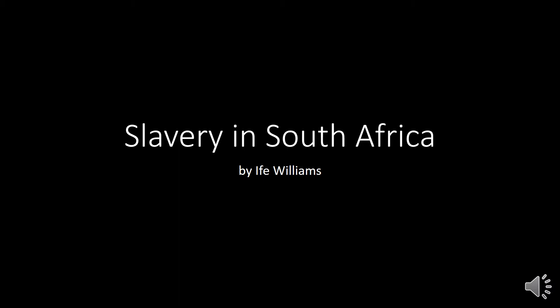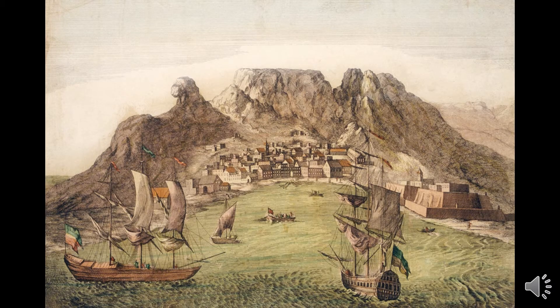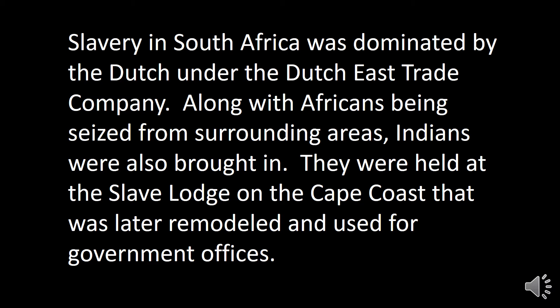Slavery in South Africa was dominated by the Dutch under the Dutch East India Company. Along with Africans being seized from surrounding areas, Indians were also brought in. They were held at the slave lodge on the Cape Coast, which was later remodeled and used for government offices.